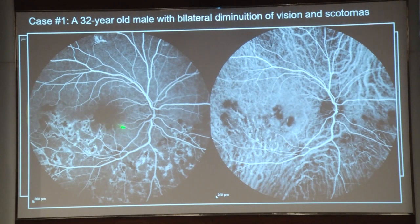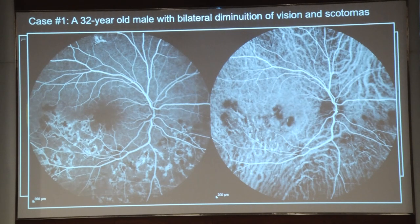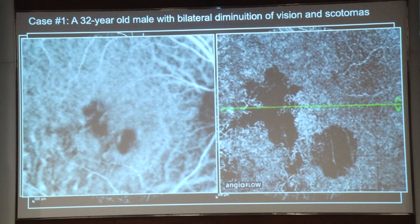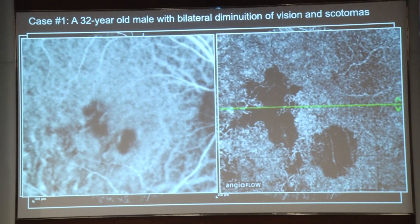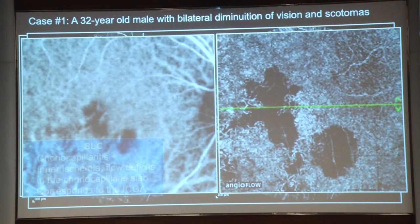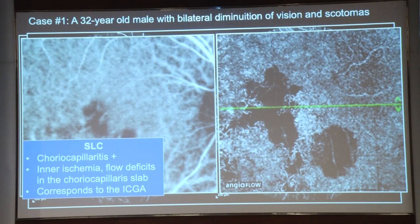When you have a combined fluorescein, if you notice, the macular lesions are not very well appreciated on fluorescein. But on ICG, it becomes very apparent. When you have a hypofluorescent lesion on ICG, it is definitely an active disease. And if you have OCT angiography, you will realize that the lesion exactly corresponds to the hyporeflectivity on OCT angio. You can follow these patients even non-invasively once you have a baseline test. OCT angio tells you that it is definitely a case of choriocapillaritis with inner ischemia, which corresponds to ICG.